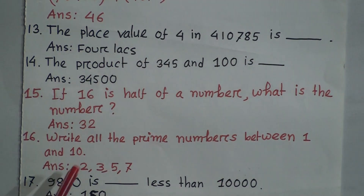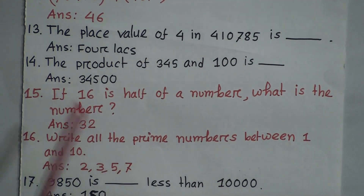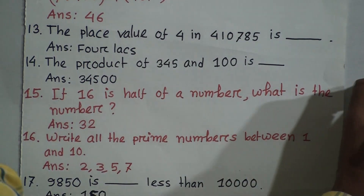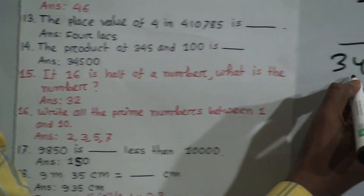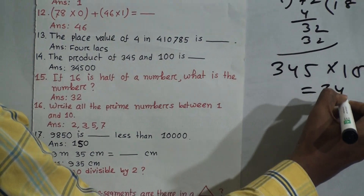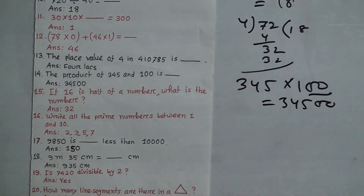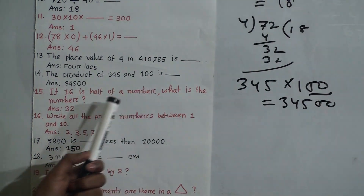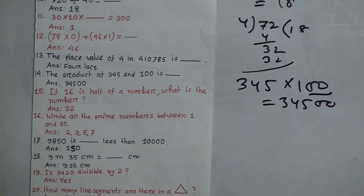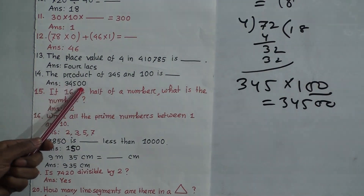Question 14: What is the product of 345 and 100? This is easy multiplication. 345 × 100 — you just write 345 and put two zeros. So 345 × 100 = 34,500.